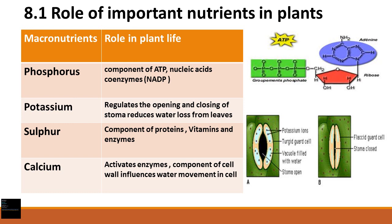Phosphorus is also required to make coenzymes — for example, NADP (nicotinamide adenine dinucleotide phosphate), which is required during photosynthesis. Phosphorus is also necessary for seed germination, photosynthesis, and protein formation. During photosynthesis, phosphorus is required to capture sunlight.